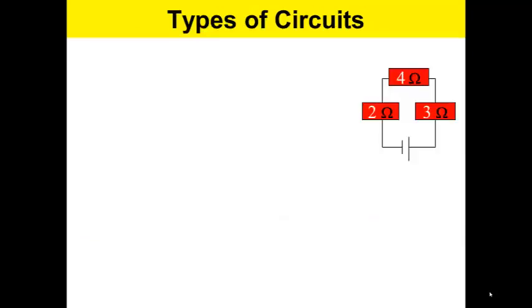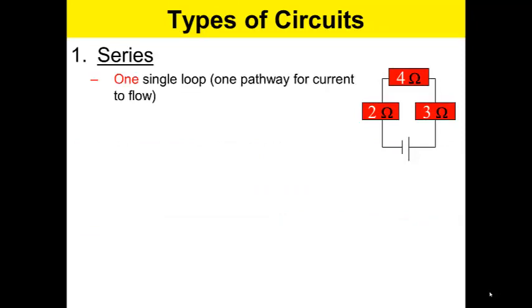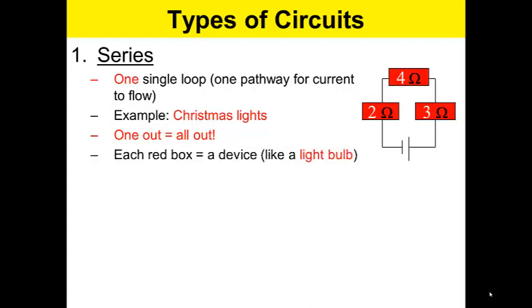We will first discuss the types of circuits. The first is a series circuit. It has a single loop or one pathway for the current to flow through. An example of this are Christmas lights. When one goes out, they all go out, although that's the old style. The new style are no longer a series circuit.